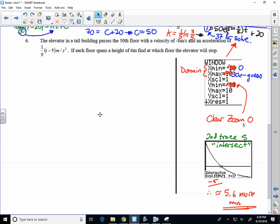Alright, so acceleration is given by that model, so we're not looking at a constant acceleration like a free-falling object. We're talking about something that could speed up and slow down at particular rates. If each floor spans a height of six meters, find at which floor the elevator will stop. So let's start off with acceleration a of t would be equal to 1 over 9 times t minus 5. Just to make the algebra a little bit easier, I'm going to distribute that and make it 1 over 9 t minus 5 ninths.